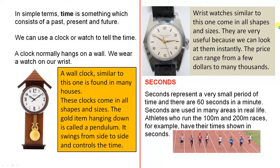These clocks come in all shapes and sizes. The gold item hanging down is called a pendulum. It swings from side to side and controls the time. Wrist watches, similar to this one, come in all shapes and sizes. They are very useful because we can look at them instantly. The price can range from a few dollars to many thousands.